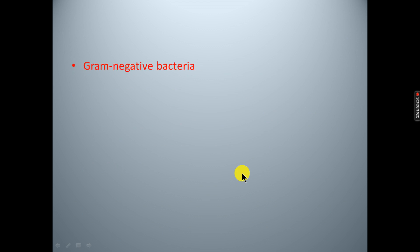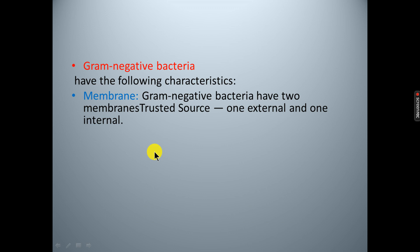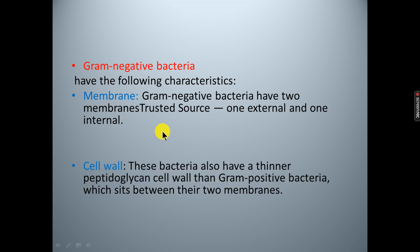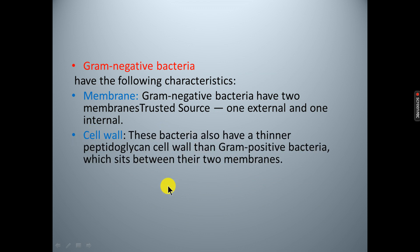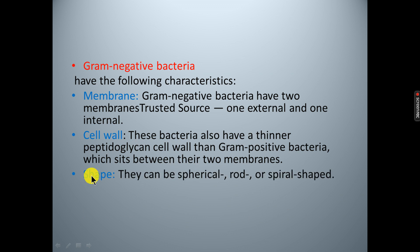Gram negative bacteria have the following characteristics. They have two membranes: one external and one internal. Gram negative bacteria are spherical, rod, or spiral shaped.